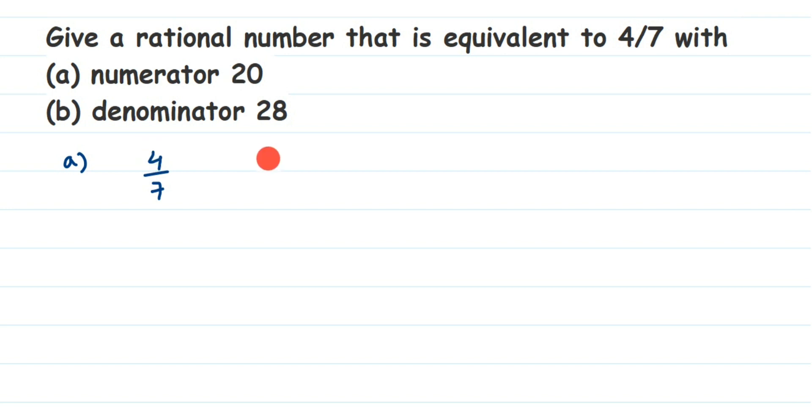If you divide I'll not get 20, so obviously we have to multiply here. To find the equivalent rational number, it's normal method - you can either multiply or divide. Divide means you should have a common factor between 4 and 7, but here we're going to multiply.